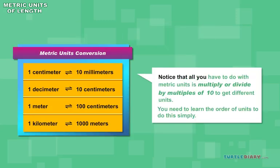Notice that all you have to do with metric units is multiply or divide by multiples of 10 to get different units. You need to learn the order of units to do this simply.